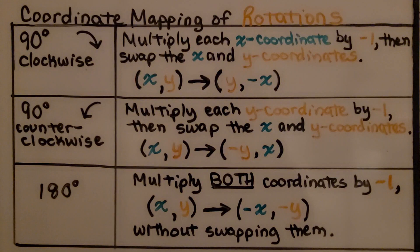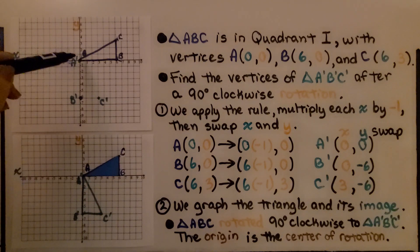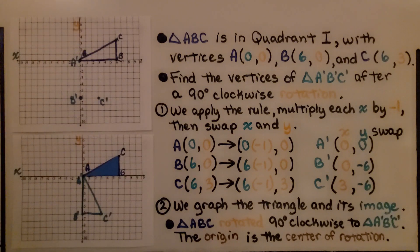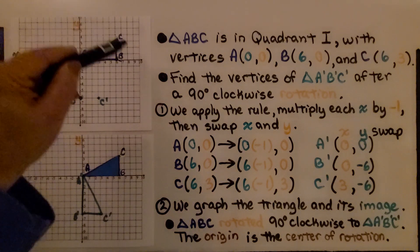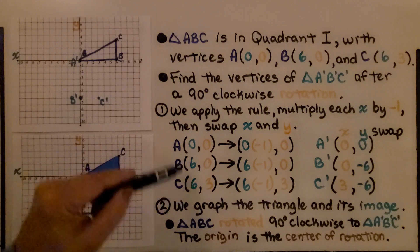Triangle ABC is in quadrant 1 with vertices A at (0, 0), B at (6, 0), and C at (6, 3). We need to find the vertices of triangle A'B'C' after a 90 degree clockwise rotation. We apply the rule: multiply each x value by negative 1, then swap x and y.